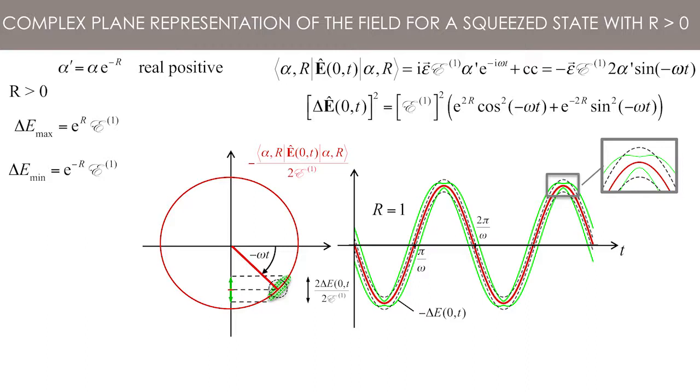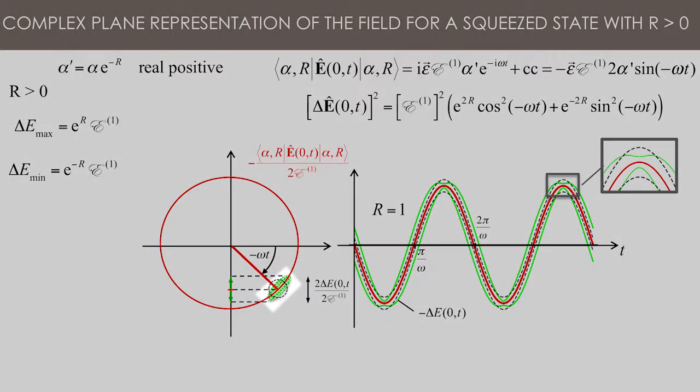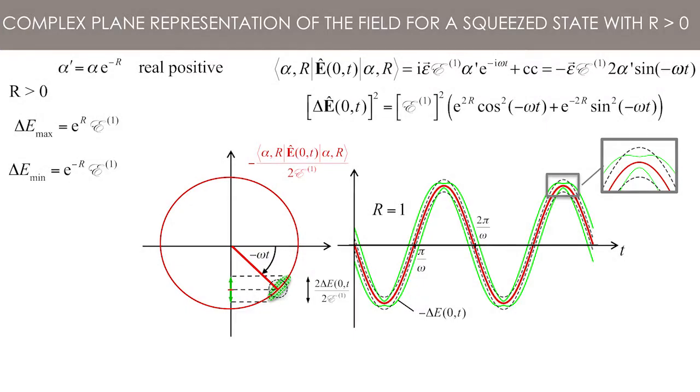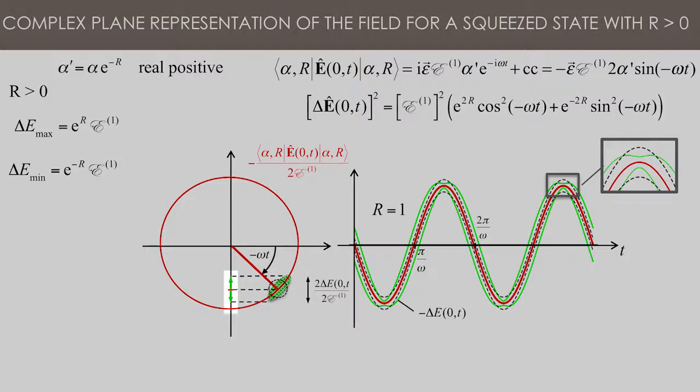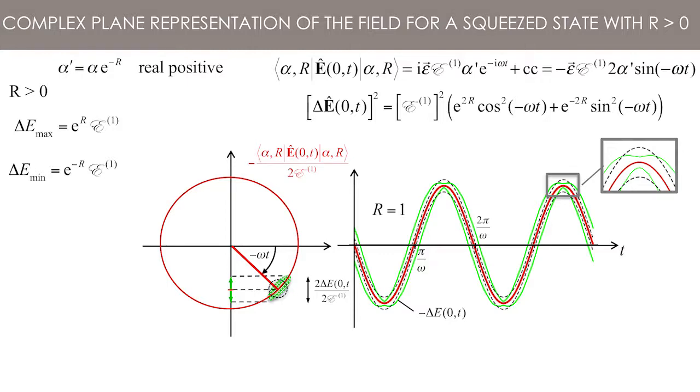It is still centred on a complex number whose modulus is alpha prime. But its long axis is tangent to the rotation, while its short axis is along the radius. The projection on the imaginary axis yields the average and the dispersion of the field. The dotted black circle represents the standard deviation for a quasi-classical state alpha prime. Here again, the product of the dispersions has the minimum value compatible with the Heisenberg relation. This means that a squeezed state is a minimum dispersion state as a quasi-classical state.